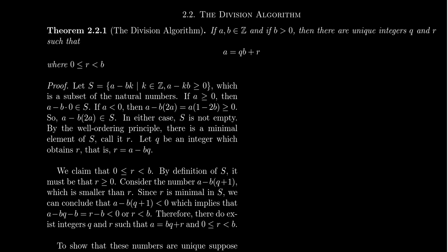The division algorithm, as it's commonly referred to in the literature, is a statement about integers. We have two integers A and B such that B is a positive number — it's strictly greater than zero. Given these two numbers, there exist unique integers Q and R such that A equals QB plus R, where R is some number between zero and B — it could equal zero, but it won't ever equal B.